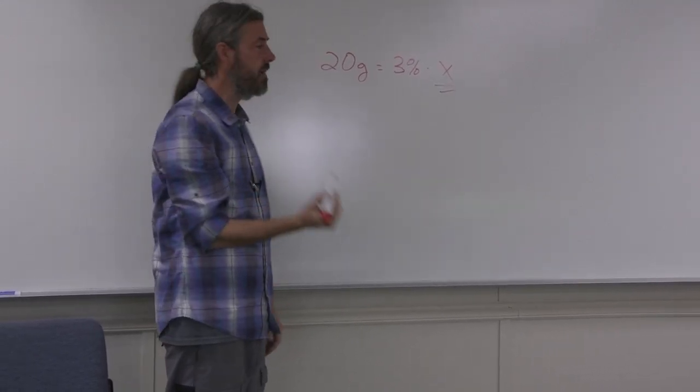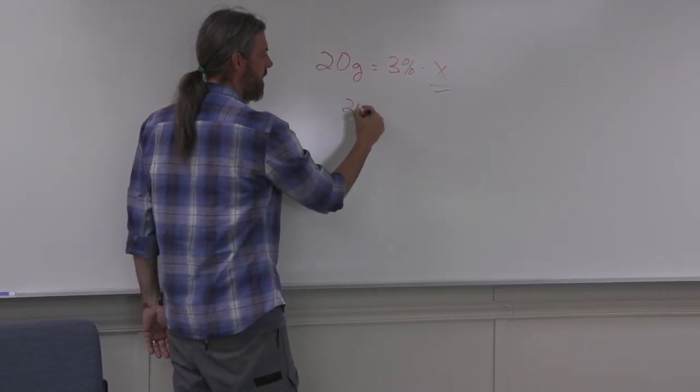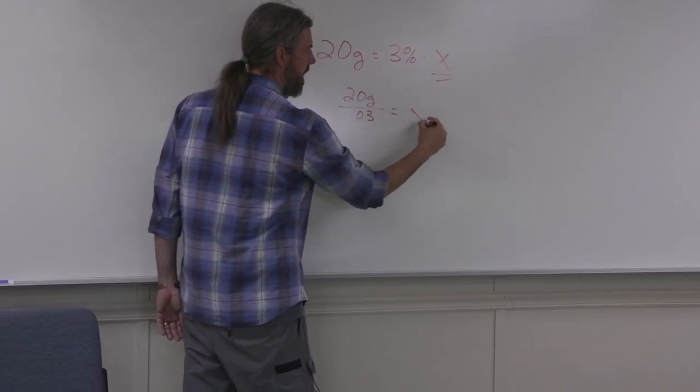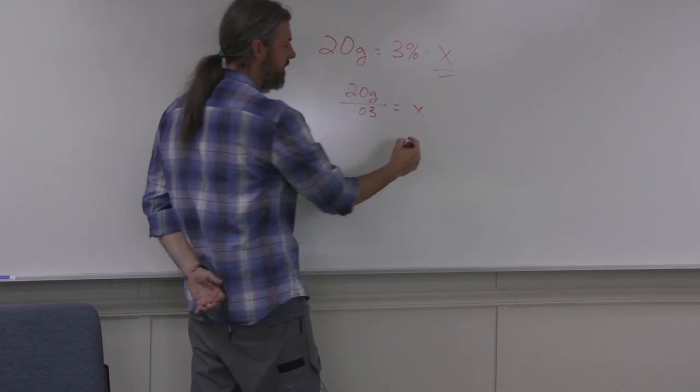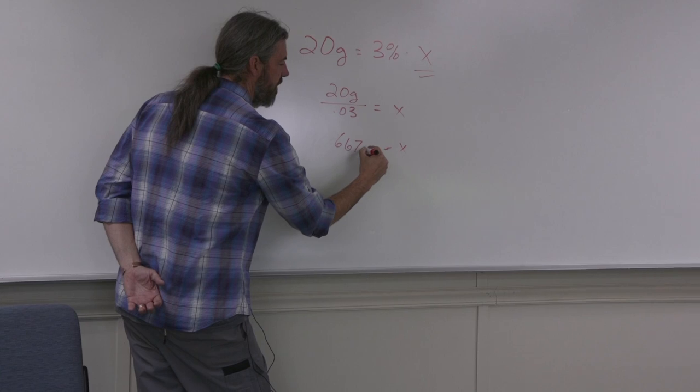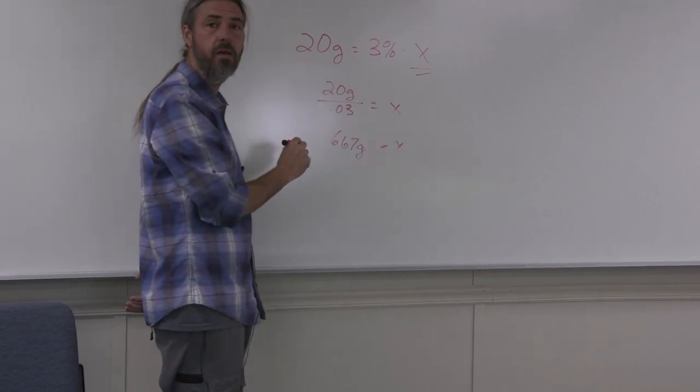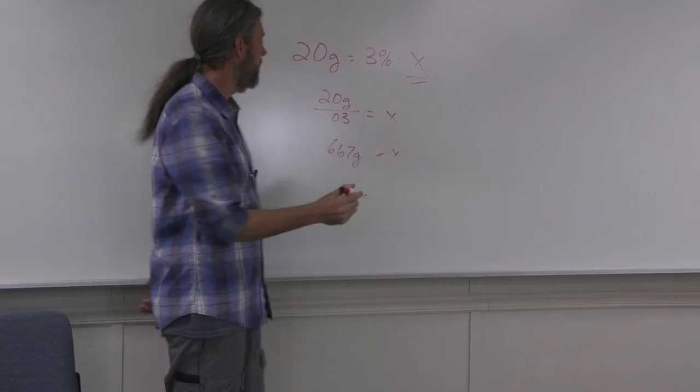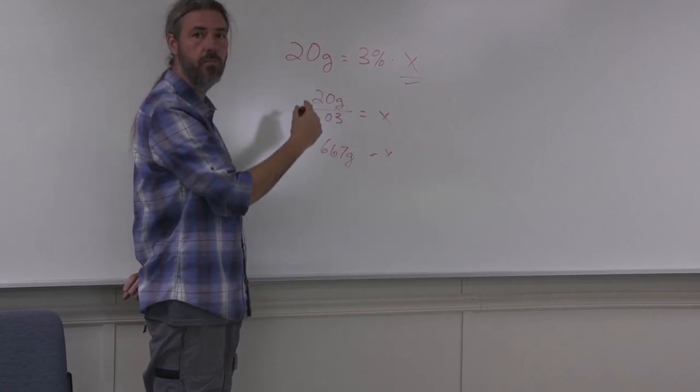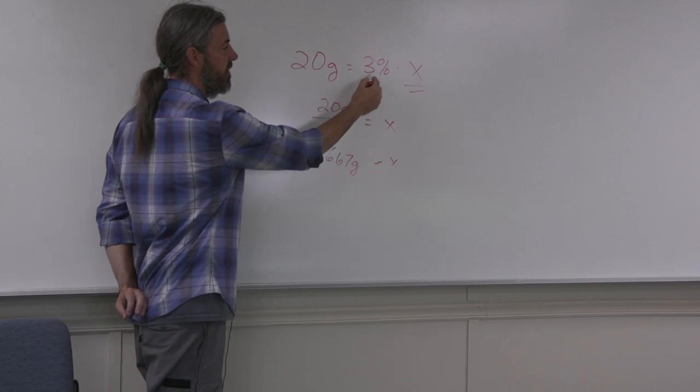If I say 3% of what equals 20 grams, this will tell me what biomass I need to put in that fish tank. If I do 20 grams of fish feed over 3% equals x, that tells me in that fish tank I need 667 grams of tilapia to eat 20 grams of fish feed every day to support the system.